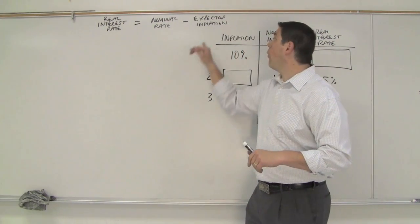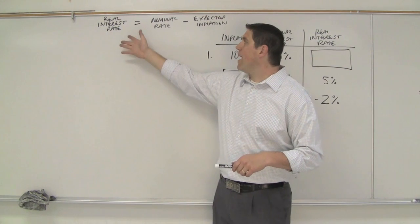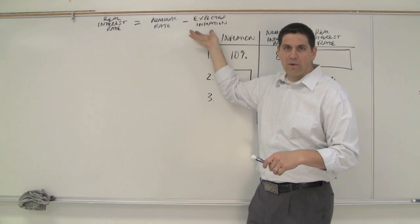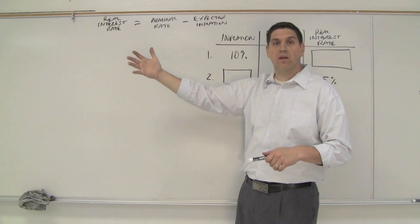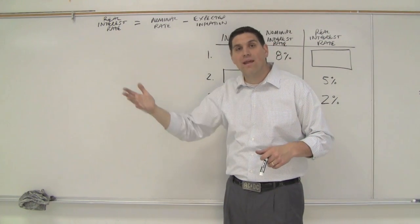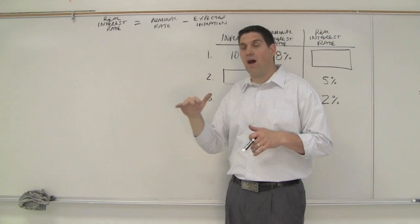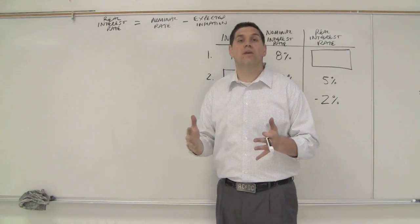Now, you might be asking yourself, why is it expected inflation, not just inflation? When a bank tries to figure out its real interest rate, they don't really know what's going to happen to prices. They just expect prices to do something. And that could lead to something called unanticipated or unexpected inflation. When the prices go up different than what people thought, that means either the bank or the borrower, someone's going to lose out.